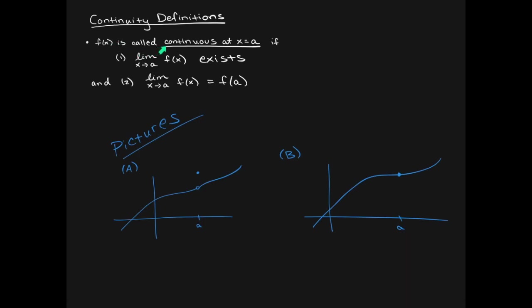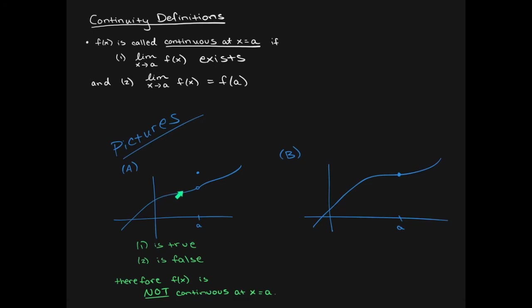A function is called continuous at x equals a — you pick an x value and say whether it's continuous there. F of x is called continuous at x equals a if the limit exists and the limit is actually equal to the height of the function. The plus-minus is not included; the left limit exists, the right limit exists, and they're equal to each other. In addition, the height of the function at x equals a is also equal to the value of the limit — there are actually four conditions built into these two statements. In this first picture, the height approaching from the left matches up with the height approaching from the right.